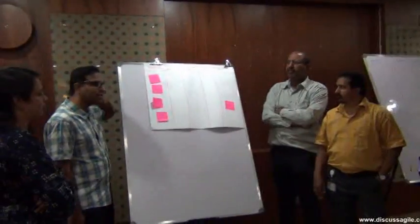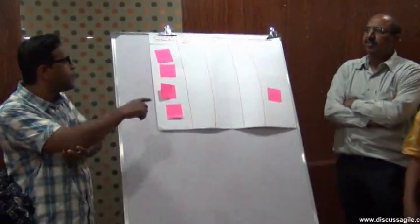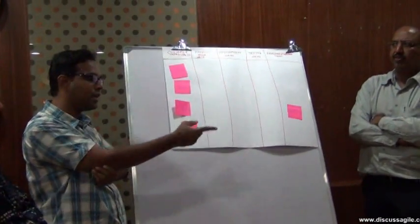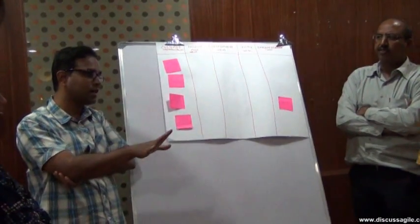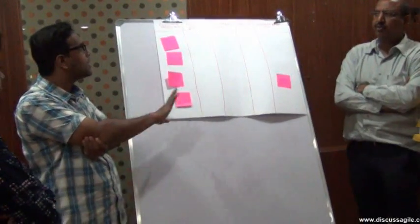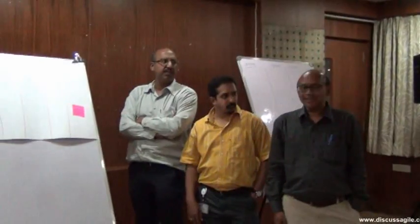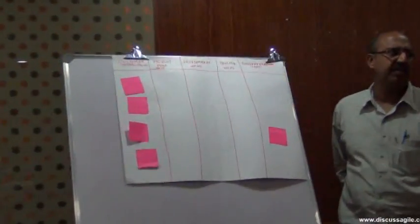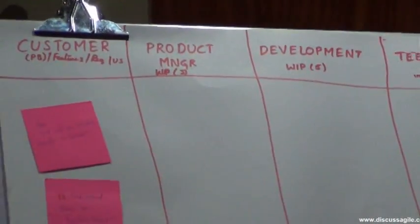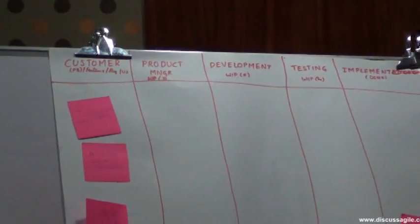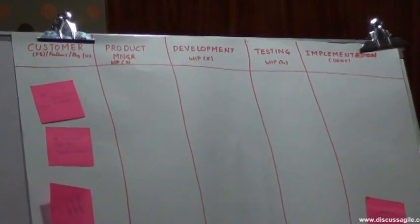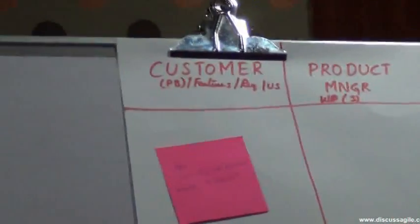So what we have done is we have derived this Kanban board from the value stream described by him. He actually described the value stream he follows in his company and we derived this Kanban board from that value stream. The requirements come from the customer, and these requirements do not go directly to the development team. There will be a product manager who will have interaction with the customers, not the development team. He collects all the requirement features the customer is expecting - the list of all backlog items. We can say that the customer features are backlog items.